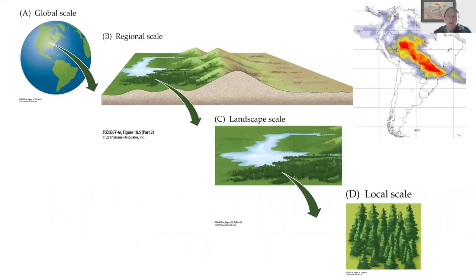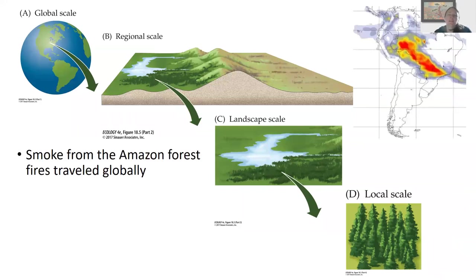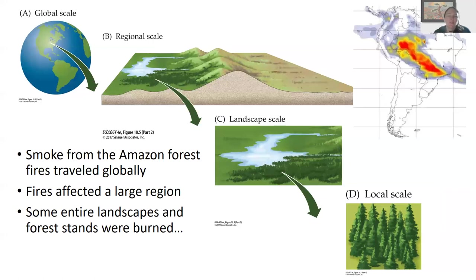We're going to talk about spatial scales in biogeography. At the global scale we look at Earth's biomes; zooming in, you have the regional scale, then the landscape scale, and finally the very local scale like a particular forest stand. For example, smoke from the Amazon forest fires traveled globally, but the fires themselves affected a large region, entire landscapes, and local-scale burning occurred — so a single event can have effects at all these different scales.